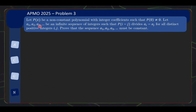The problem is a number theory one and it's quite interesting. Let P(x) be a non-constant polynomial with integer coefficients such that P(0) is not equal to 0. Let A1, A2, A3, ... be an infinite sequence of integers such that P(|i - j|) divides A_i - A_j for all distinct positive integers i, j. Prove that the sequence A1, A2, A3, ... must in fact be a constant sequence.